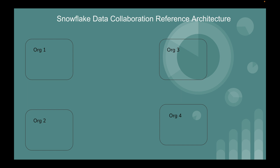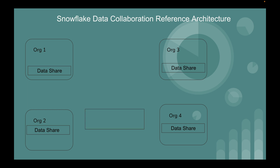They want to collaborate — sharing some data freely and some for a fee through monetization. Each organization creates a data share, which is a Snowflake object where you put all the objects, views, and tables you want to share. All four organizations create their own data shares, and these data shares come together in one place — a shared data layer — where all the shared data is contributed.